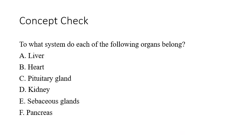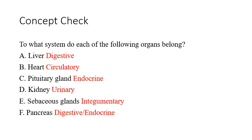Just a brief review at the end of this first lecture. Think about these different organs and which system they belong to: liver, heart, pituitary gland, kidney, sebaceous glands, and pancreas. The liver belongs in the digestive system. The heart is in the circulatory or cardiovascular system. The pituitary gland is part of the endocrine system. The kidneys are part of the urinary system. Sebaceous glands are part of the integumentary system — those are tiny glands in your skin. And the pancreas is part of both your digestive system and your endocrine system, making it a dual-function organ found in both systems. I hope this was a helpful introduction to the material — let me know if you have any questions.